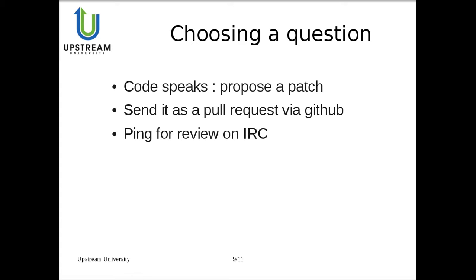Instead of saying a lot about whether the bug should be written differently, I will just propose a patch and send it as a pull request via GitHub. It's not the only way to submit a patch, but it's one possible way. I will then ask for review — specifically asking on IRC if anyone is willing to review my patch.